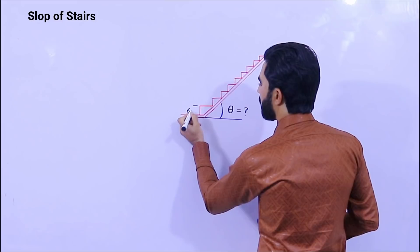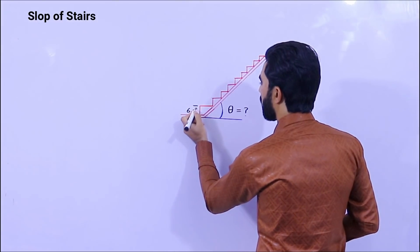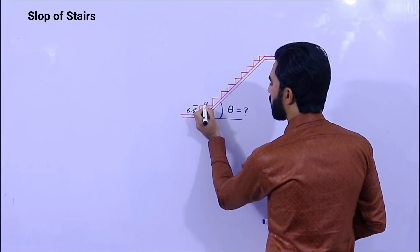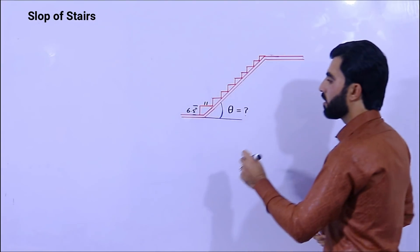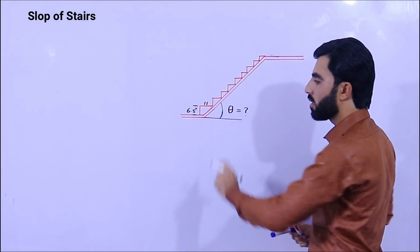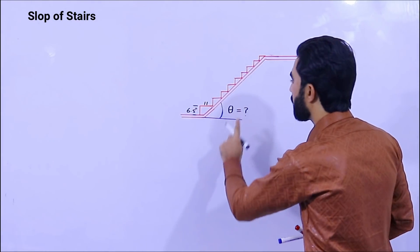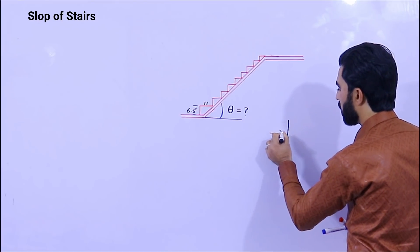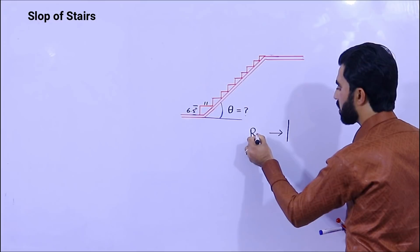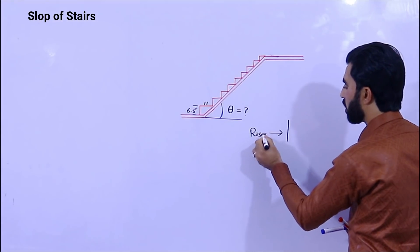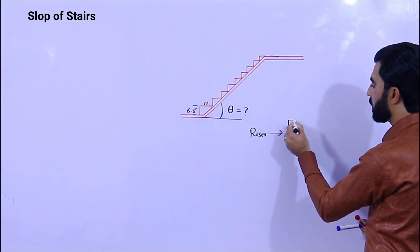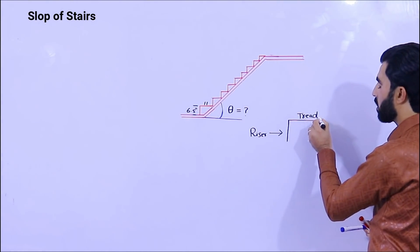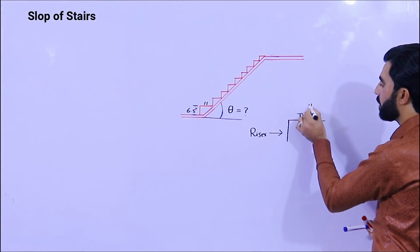The riser is 6.5 inches and tread is 11 inches. What is riser guys? This is called riser, the vertical portion. And the horizontal is tread. So the tread is 11 inches.